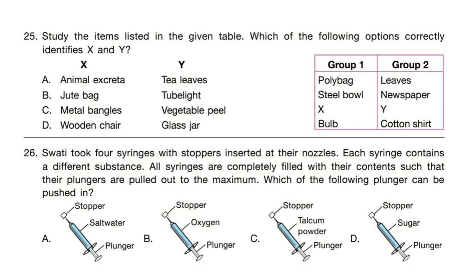Question 26: Swati took 4 syringes with stoppers inserted at their nozzles, each containing a different substance. All syringes are completely filled with their contents such that their plungers are pulled out to the maximum. Which of the following plungers can be pushed in? Correct answer is option B — the syringe with oxygen.